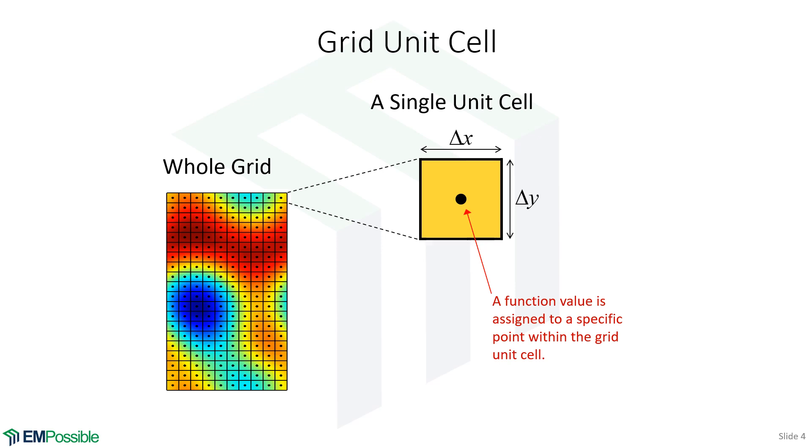If we zoom in on one of the unit cells here, the cell has some height. If this is the y direction, we'll give it the resolution parameter delta y. And it has a width. If this is the x direction, we'll call that delta x. Delta x and delta y, we like them to be as equal as possible. We like these to be squares.